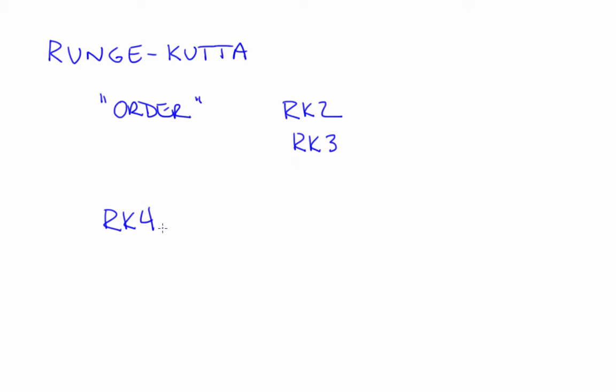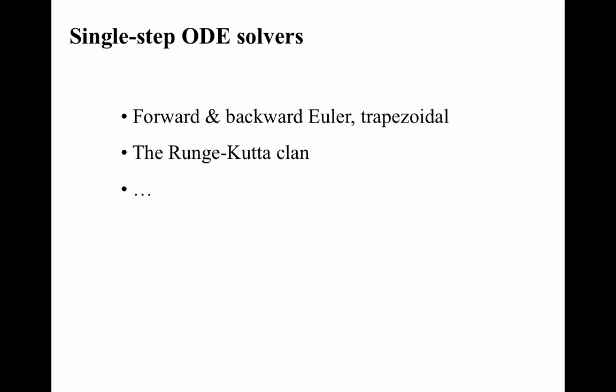Forward Euler, backward Euler, trapezoidal, and the Runge-Kutta clan are what are called single-step methods. Separating these out is actually a little bit deceptive, because forward Euler, backward Euler, and trapezoidal are actually members of the RK clan. Forward Euler and trapezoidal are RK1 and RK2 respectively. Backward Euler is an implicit version of RK1.